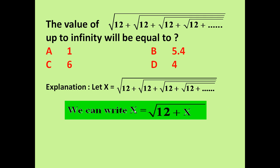If we square this equation, it will become X² = 12 + X. Now we can solve this equation for the value of X. Solving, we get X = -3 or 4.